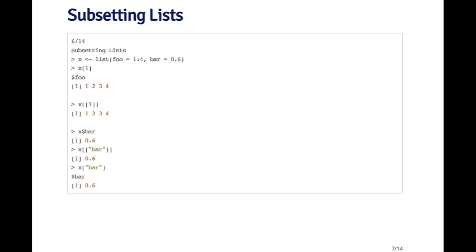In the next example, I'm using the dollar sign — x dollar bar. That gives me the element associated with the name bar, which is the single number 0.6. I can also use the double bracket operator and pass it a string: x double bracket quote bar is the same as doing x dollar bar, and it just gives me 0.6.